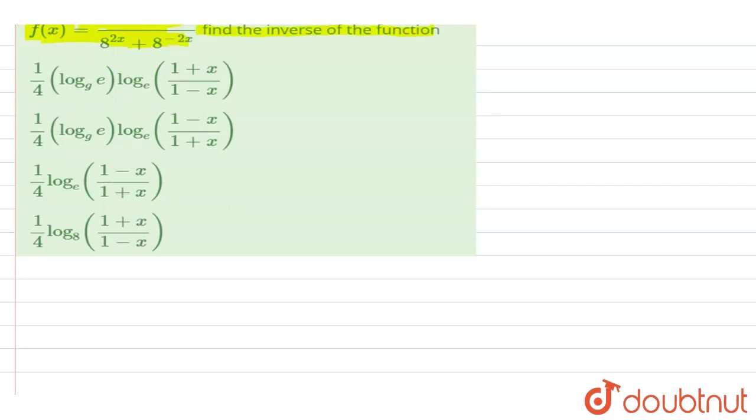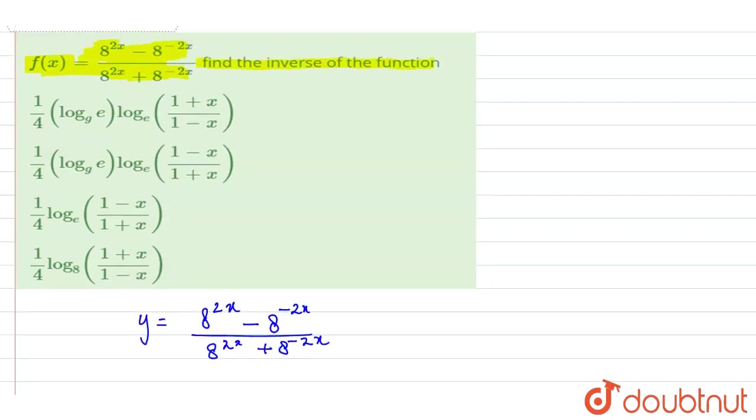Okay, so now let's suppose that f(x) is equal to y. So this is given to us as 8 to the power 2x minus 8 to the power minus 2x upon 8 to the power 2x plus 8 to the power minus 2x. Okay, so this is the function given to us.